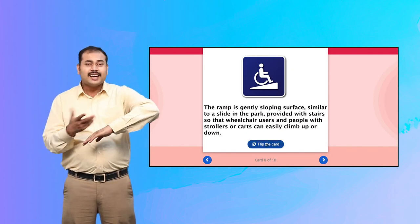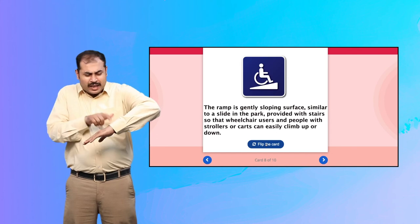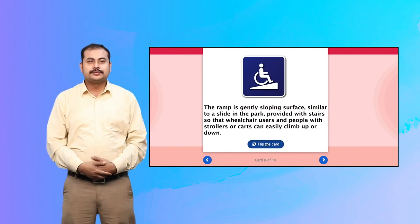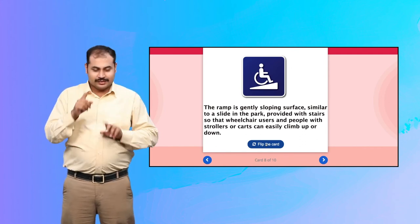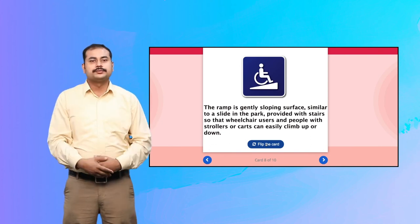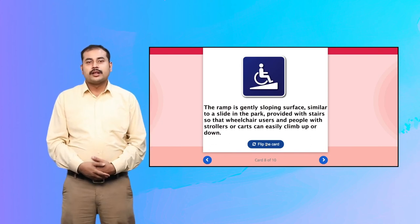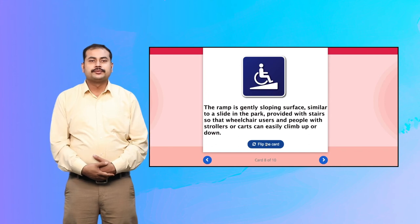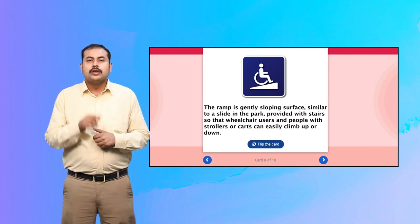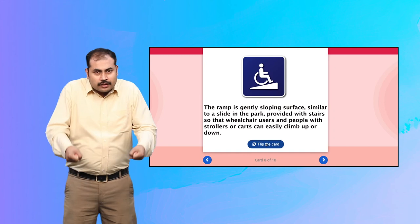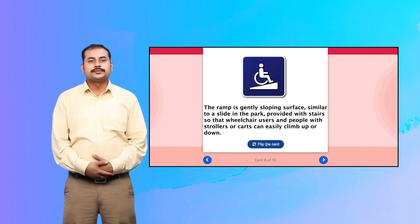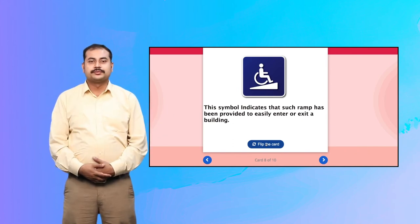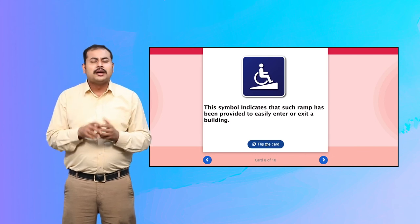The ramp is a gently sloping surface, similar to a slide in the park, provided with stairs so that wheelchair users and people with strollers or carts can easily climb up or down. This symbol indicates that such ramp has been provided to easily enter or exit a building.